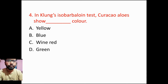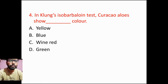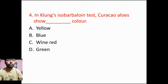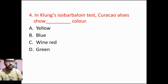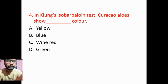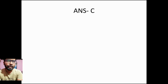Then coming to the next question: in Klum's isovalent test, curacao aloes show which of the following color? Option A: yellow, Option B: blue, Option C: wine red, Option D: green. In Klum's isovalent test, curacao aloes always show wine red color. So option C will be the right answer.